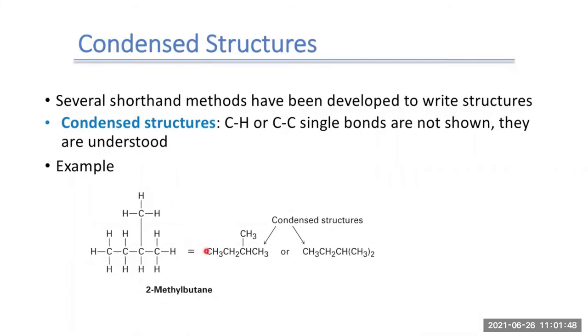Instead, you might see what we call condensed structures. In condensed structures, the carbon and hydrogen bonds and the carbon-carbon bonds are shortened. So instead of drawing out every CH or every CC single bond, we tend to shorten it. We understand that they're still present, but we don't draw it out. So it becomes a little quicker to draw our structures like this.